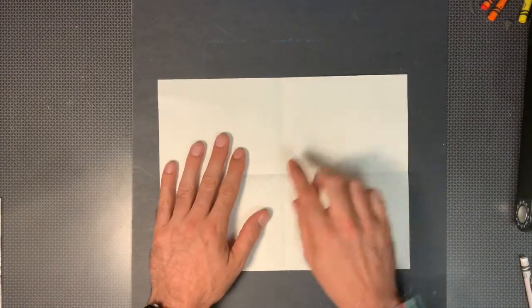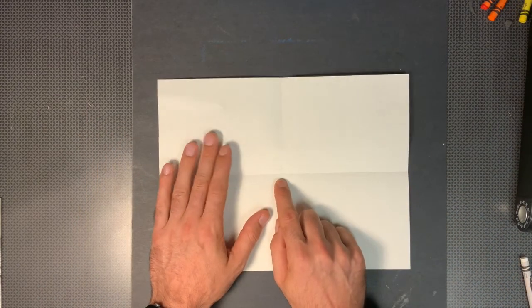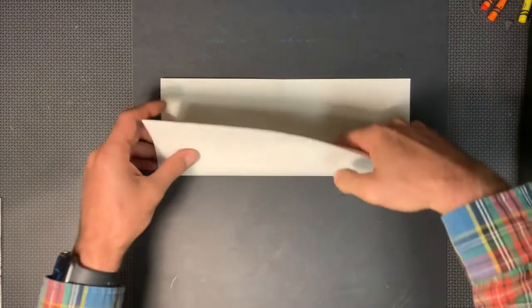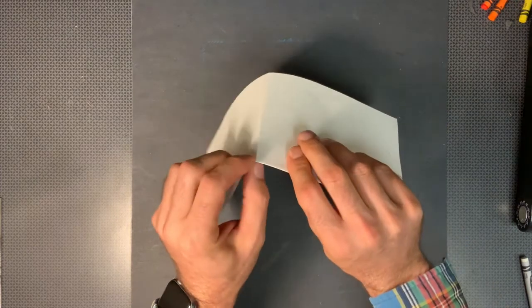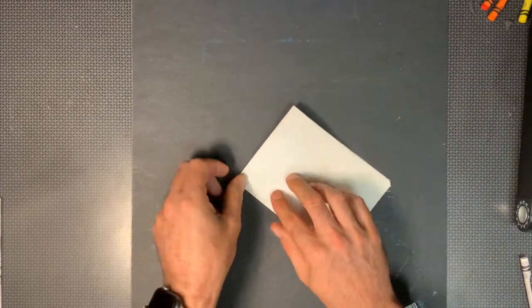This will give us our central radial point which is where the lines meet. Now what I'd like you to do is fold it back in half and back together keeping that central point right here.